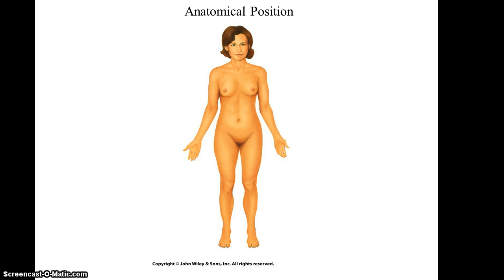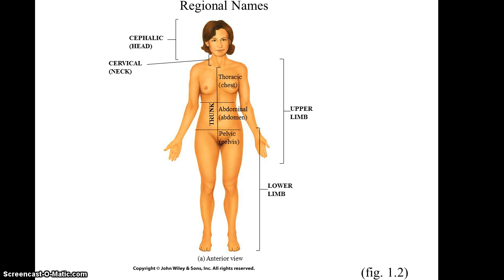When you look at the human body, you see that it comes in a lot of different regions. The large regions include the cephalic region, which is the head; the cervical region, or the neck; the trunk, which includes the thoracic region, the abdominal region, and the pelvic region; the upper limbs; and the lower limbs.